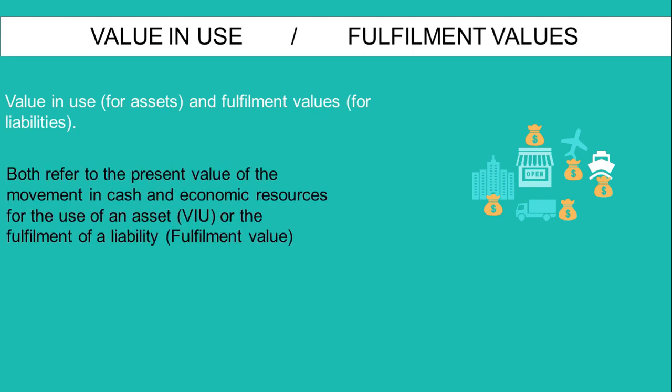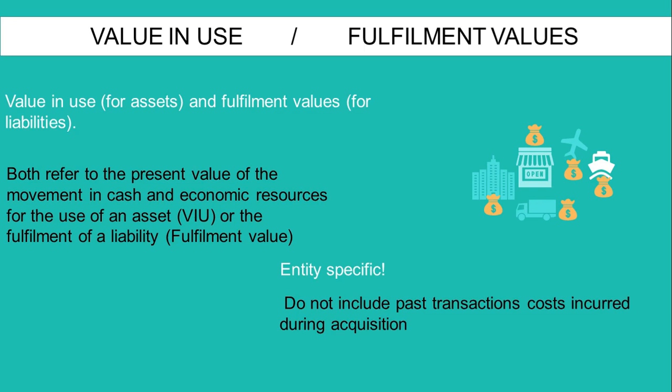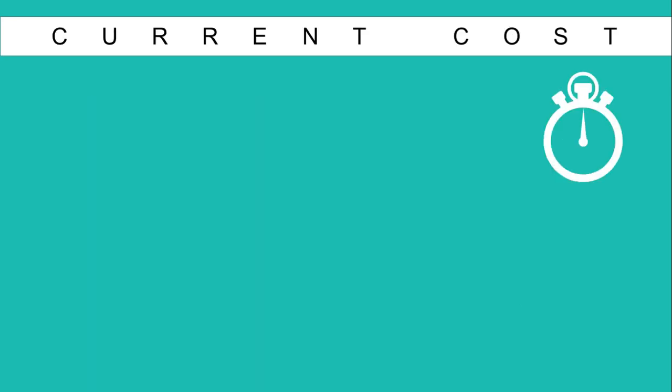Value in use for assets and fulfillment value for liabilities both refer to the present value of the movement in cash and economic resources for the use of an asset or the fulfillment of a liability. Unlike fair value, which takes the perspective of market participants, value in use and fulfillment values are entity-specific, meaning they depend on the specific entity. They are also both based on future cash flows, therefore they do not include past transaction costs incurred during acquisition, but include the present value of expected transaction costs for disposal.